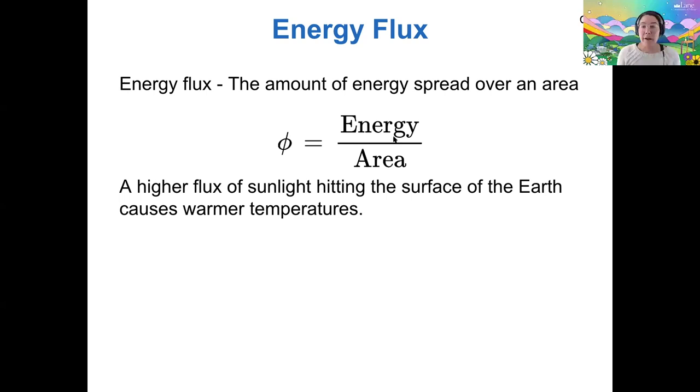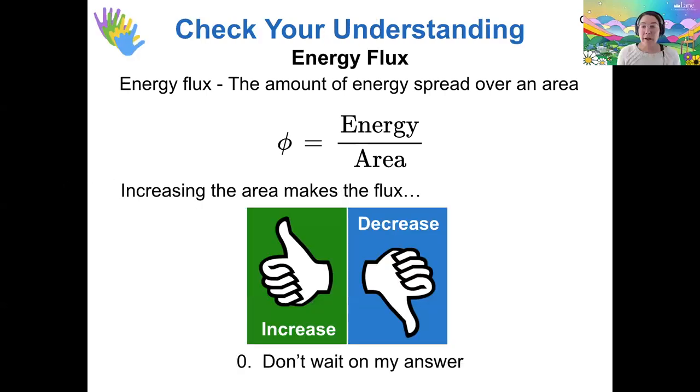So if you have a higher flux, a higher energy per area, then that will cause the surface of the earth to heat to a warmer temperature. And we can see this using an experiment, which we can't do because we're on Zoom, but you can think about it instead.